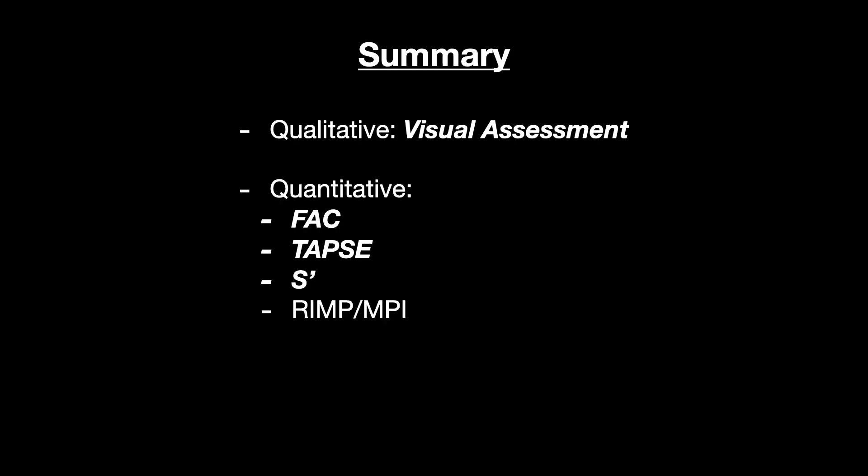In summary, how do we assess the RV? Firstly, with visual assessment — a qualitative measure. It's strongly recommended that at least one quantitative measure is used, and a combination may more reliably distinguish between normal and abnormal function. The best ones for us would be fractional area change, TAPSI, and S prime. Personally, I would do a TAPSI and an S prime.